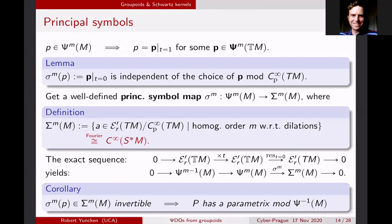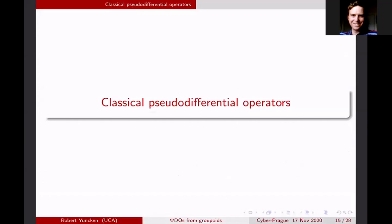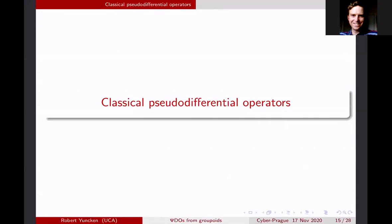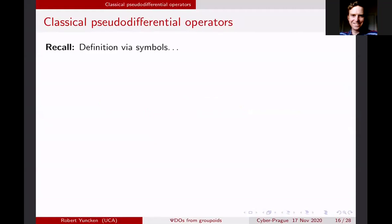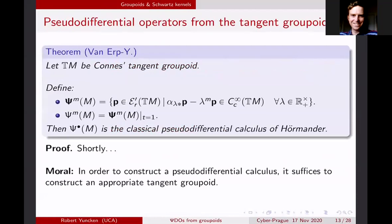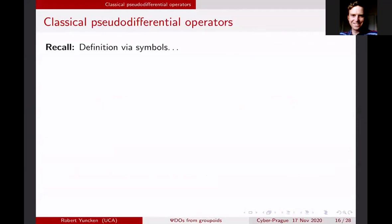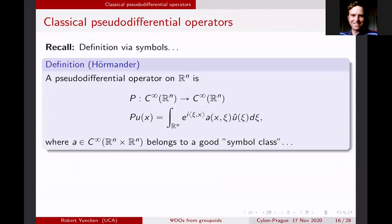This setup is very simple and gives many of the standard facts about pseudo-differential operators just from the geometry of this tangent groupoid. Let's now do a proof of this. So let me remind you what the theorem was: there's a characterization that pseudo-differential operators are restrictions to t = 1 of essentially homogeneous distributions on the tangent groupoid. Let's recall what a pseudo-differential operator is in terms of symbols. A pseudo-differential operator is given by the formula: apply P to u, take the Fourier transform of u, multiply by a full symbol A, then take the inverse Fourier transform. That defines a pseudo-differential operator as long as A belongs to some good symbol class.